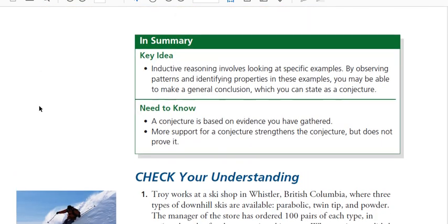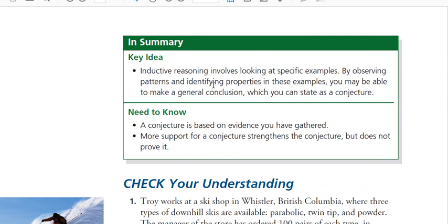I'll just highlight the in summary terms here now. So the key idea is inductive reasoning involves looking at specific examples. And by observing these patterns and identifying the properties in the examples, you may be able to make a general conclusion, which you can state as a conjecture. So your general conclusion could be, hey, this is the pattern that I have noticed. A conjecture is based on evidence. And more support for a conjecture strengthens the conjecture, but does not necessarily prove it.